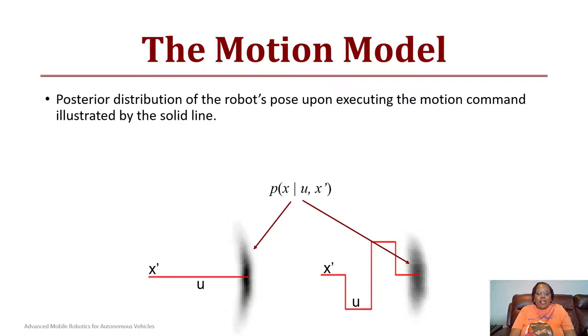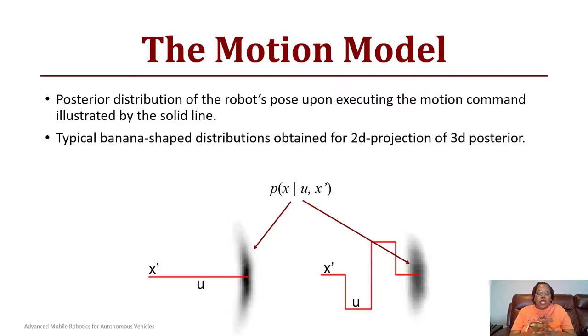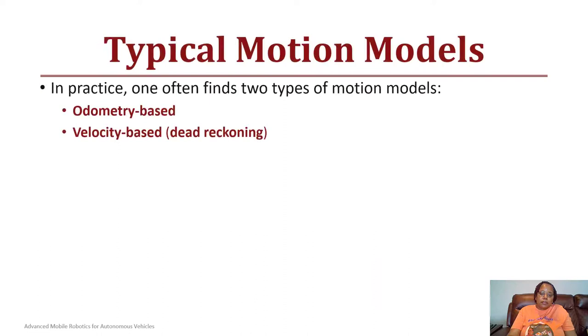The posterior distribution of the robot's pose based upon execution of a motion command is shown below. Assume that the robot is at a state x prime and it gives a linear or move straight command, and then it stops. This banana shape here is a plot of all of the probabilities of where the robot could possibly be. The darker the shade is, the more of a probability that the robot would be there. Notice that it's a little bit more clear when the robot moves straight, but we know when a robot makes a lot of turns or curves the probability is going to be a little less. This banana shape distribution is obtained from a 2D projection of a 3D posterior where I am most concerned with the location or the x and y location possible places the robot could be.